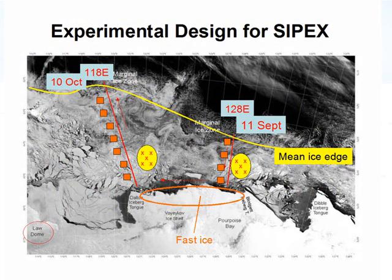This is a map of what we were trying to do — a satellite image showing the typical ice extent at this time of year, around about October, in the area south of Australia, south of Western Australia, at about 120 degrees longitude. We were looking at the physics of the sea ice zone: what the thickness of ice is, what are the processes that get the ice to grow that thickness, how the ice interacts with the atmosphere and the ocean, and very importantly, how the ice influences the animals and the plants that live in the sea ice zone — the links between the ecosystem and the sea ice itself.